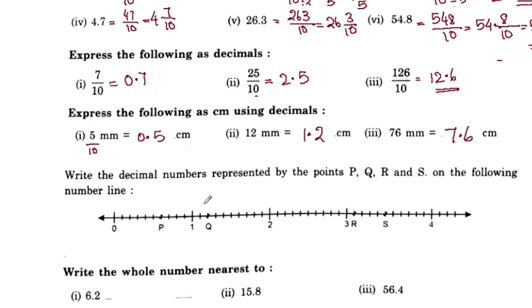Write the decimal numbers represented by the points P, Q, R, and S on the following number line. P, Q, R, and S are represented by decimal numbers.